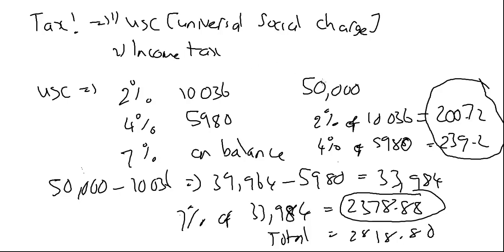If I had 50,000 euro, I pay only 2% on the first 10,036, so that gives me a bill of 200 euro and 72 cent. Then I pay 4% on the next 5,980, so that adds an extra 239 euro to my universal social charge bill. And then I pay 7% on the rest.